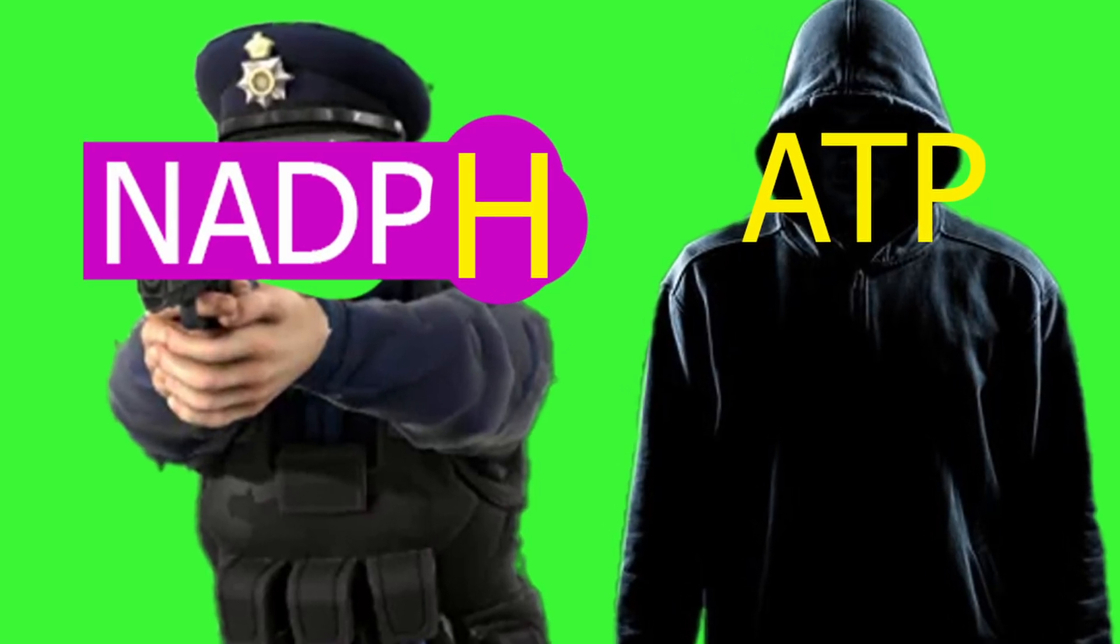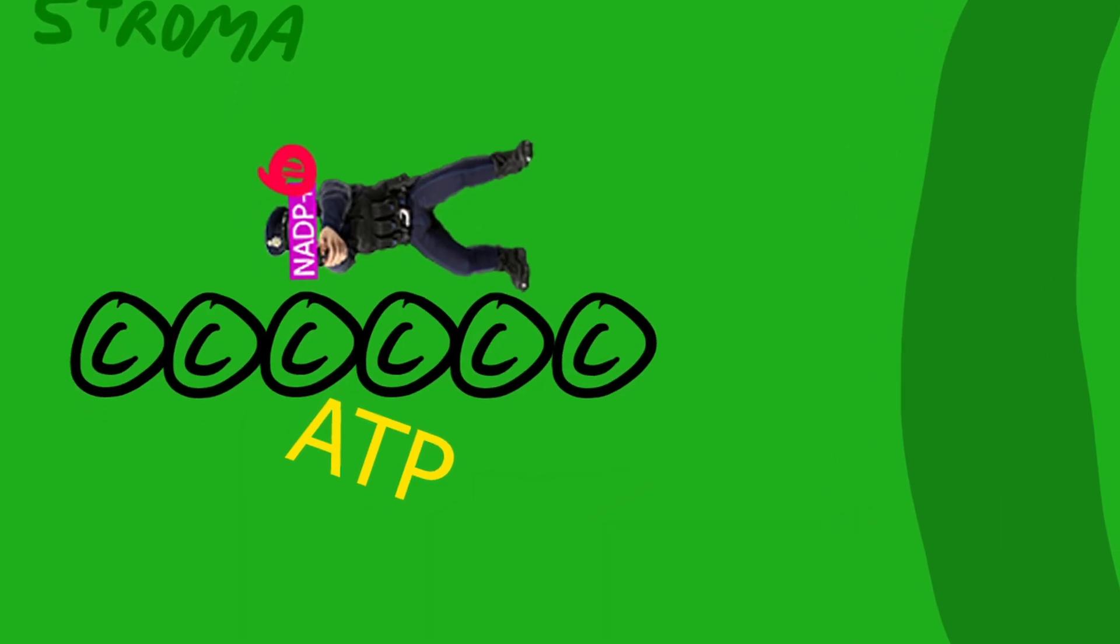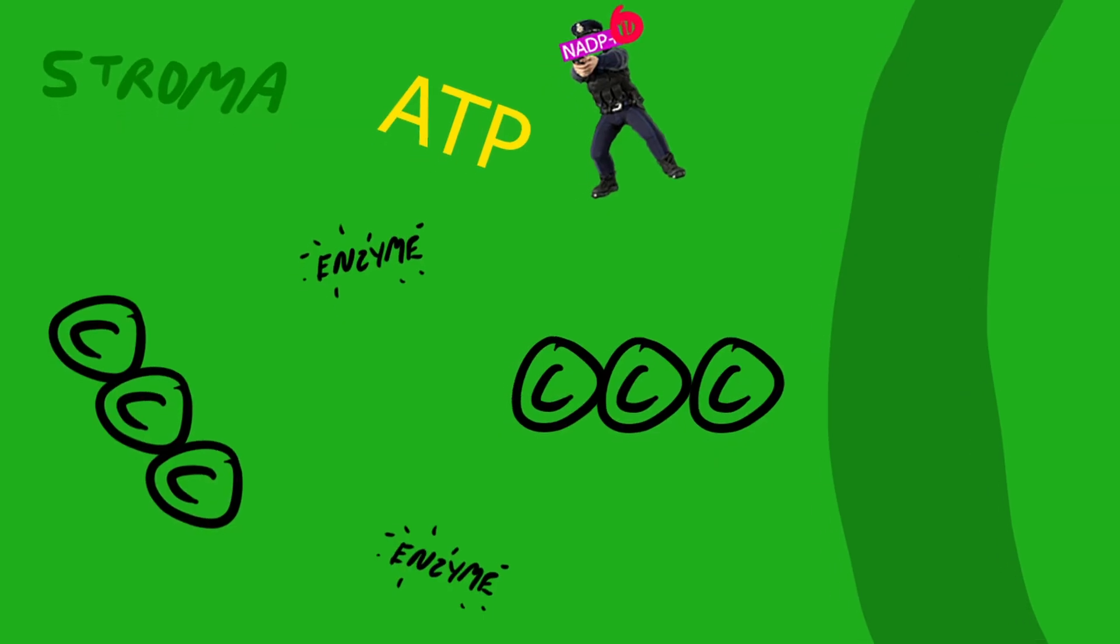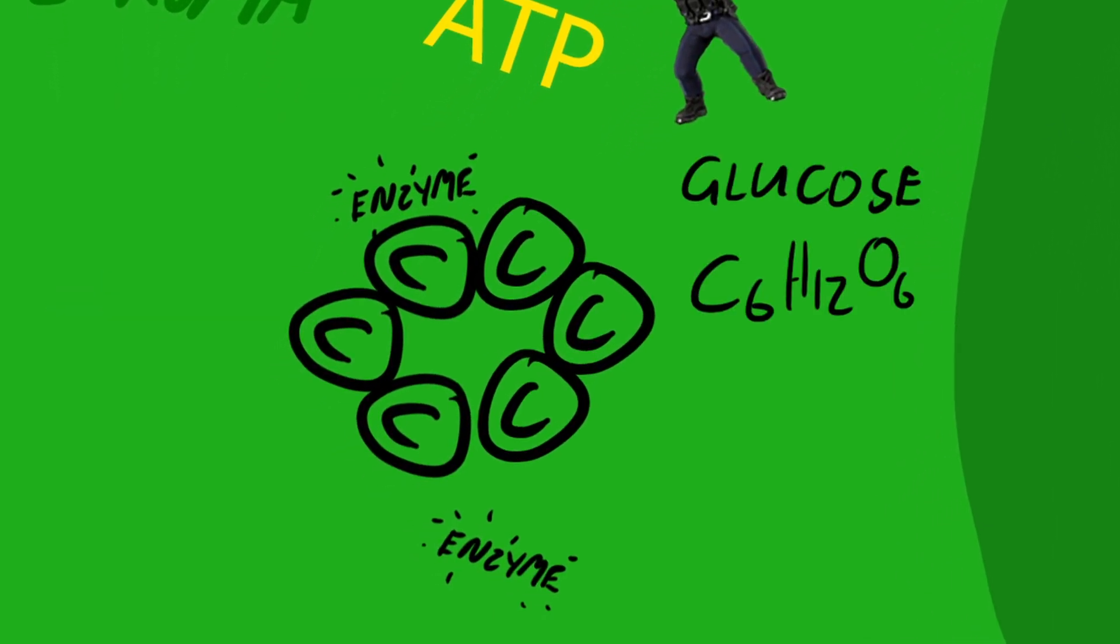NADPH and ATP break down 6C into 3-carbon molecules called phosphoglycerates. The 3Cs bind with the help of enzymes and become simple sugars such as glucose.